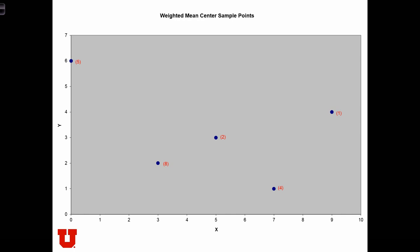Intuitively, we see some very low weights and some quite high weights. So we know that the weighted mean center is going to be pulled towards the 5, the 8, and the 4 more so than it will be pulled towards the 2 or the 1.